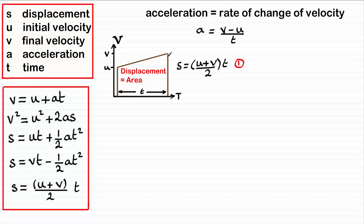And you might recognize that this is the gradient on this graph here. v minus u is this distance up here, and t is this distance across here. And so dividing the vertical height by this horizontal height gives us the gradient. So acceleration can be represented as gradient on a velocity time graph.